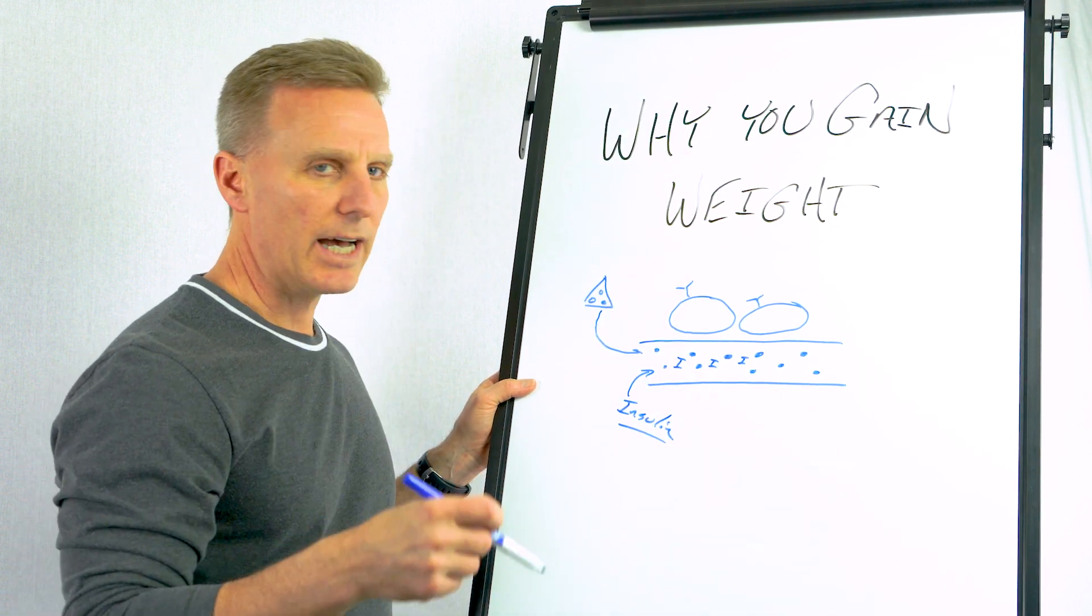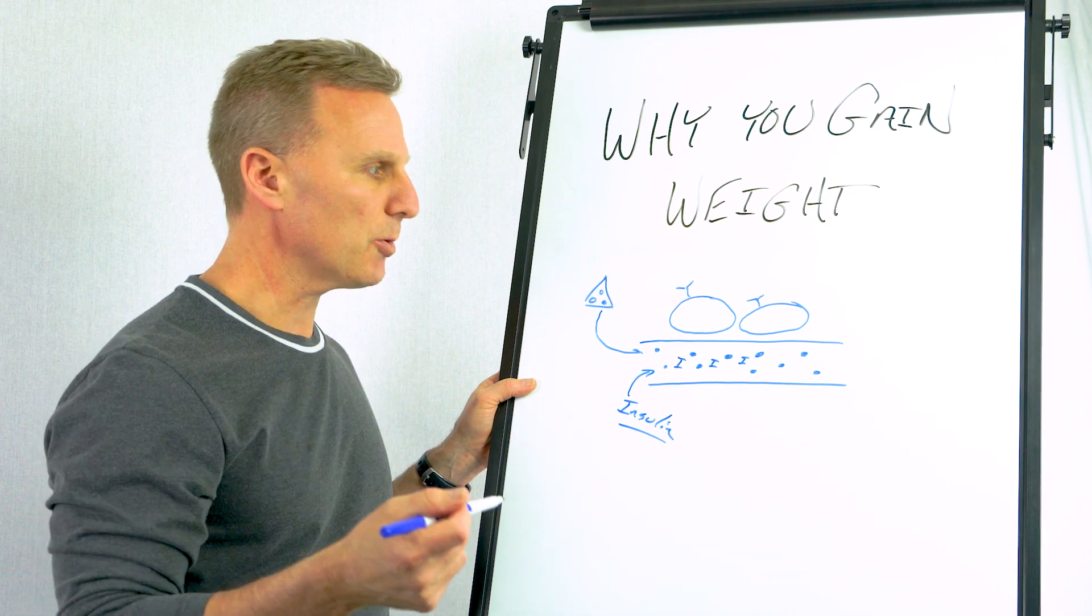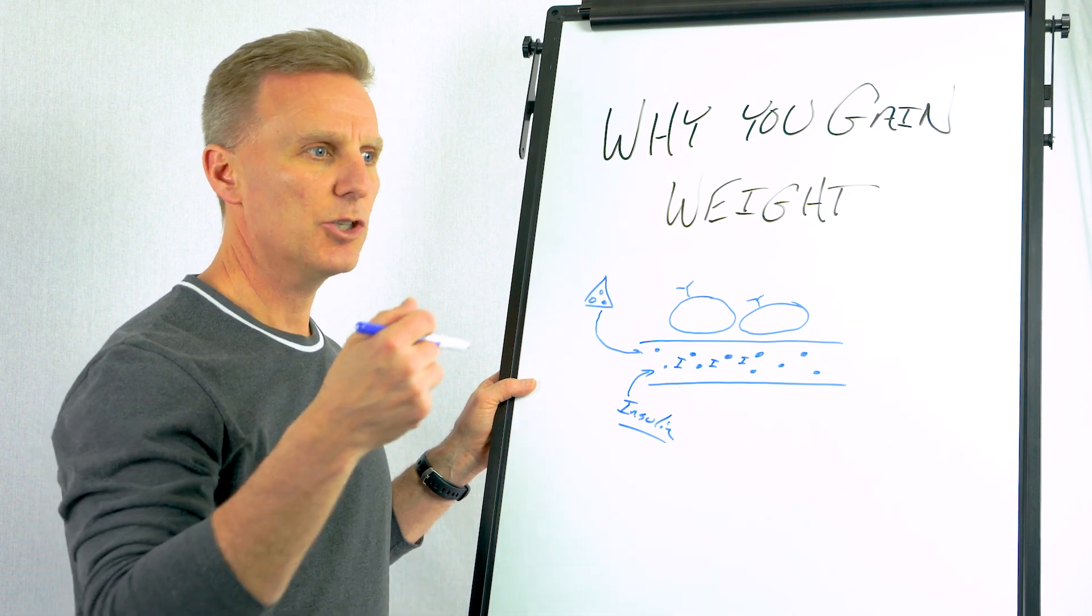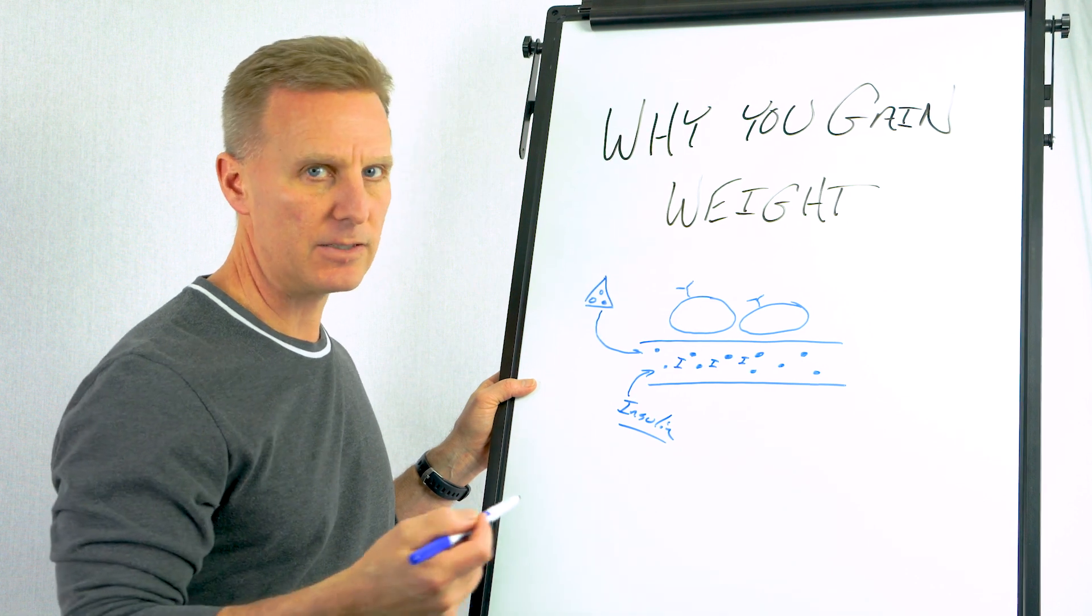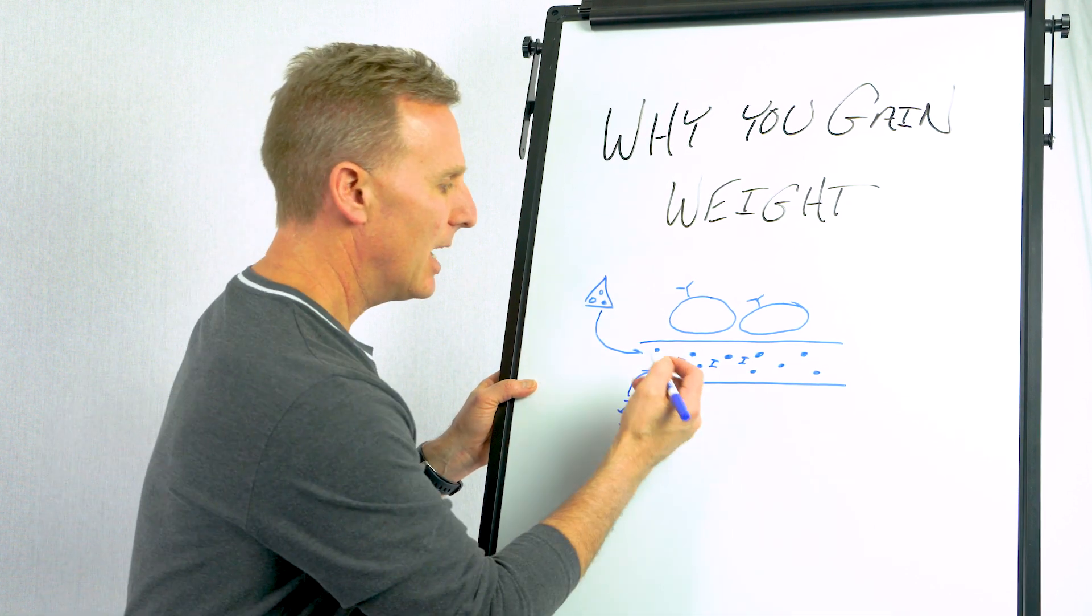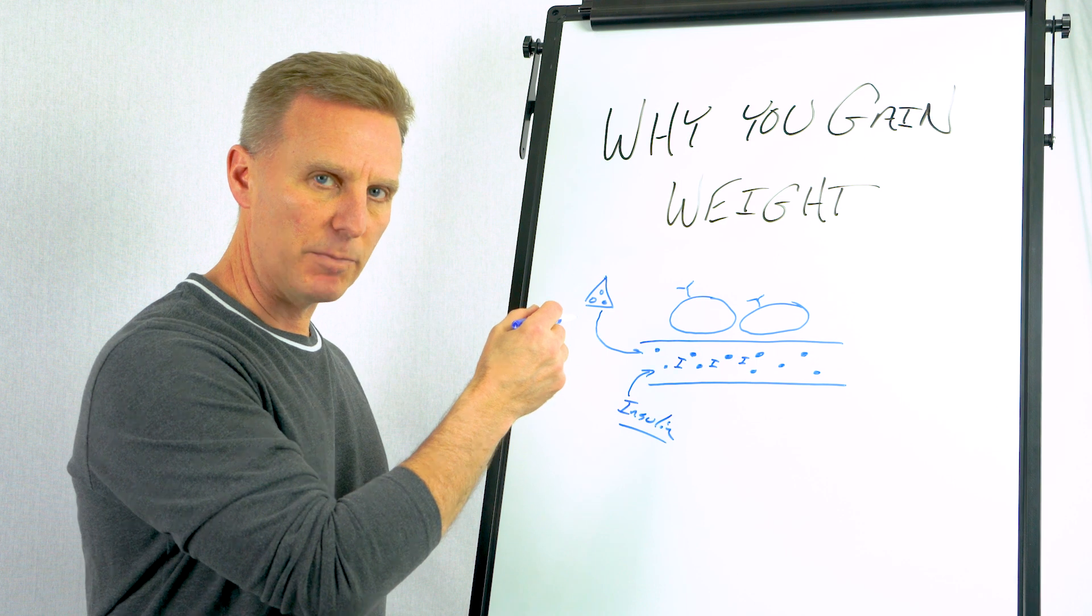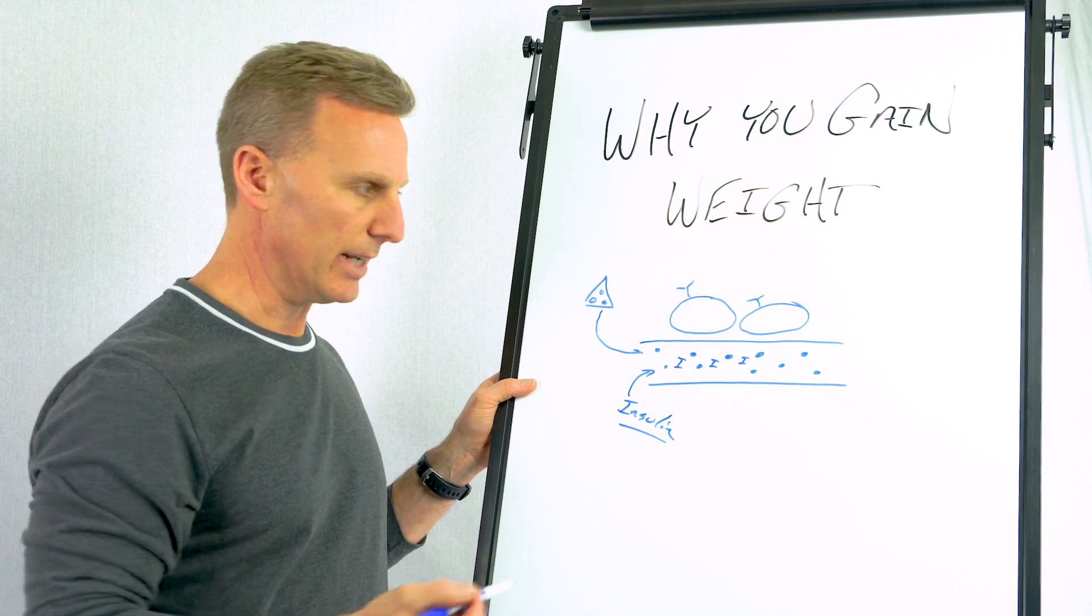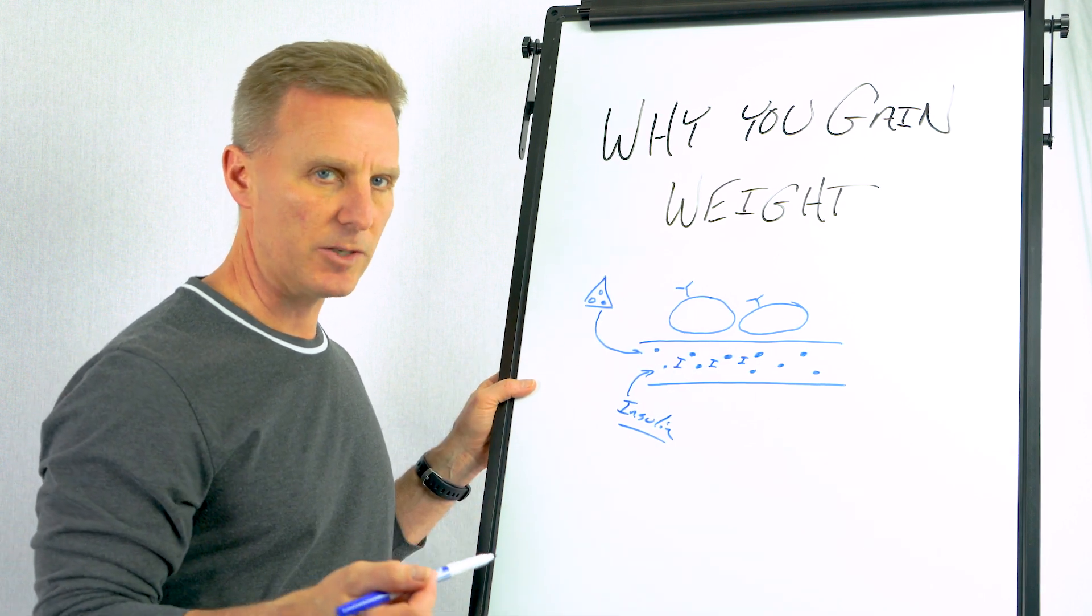If you have a situation where you're secreting too much insulin for a given sugar load, and that's called insulin resistance, then you would eat that slice of pizza, the same slice the other person ate, but your secretion of insulin would be totally different. You'd end up making a lot more insulin to cover that sugar load.